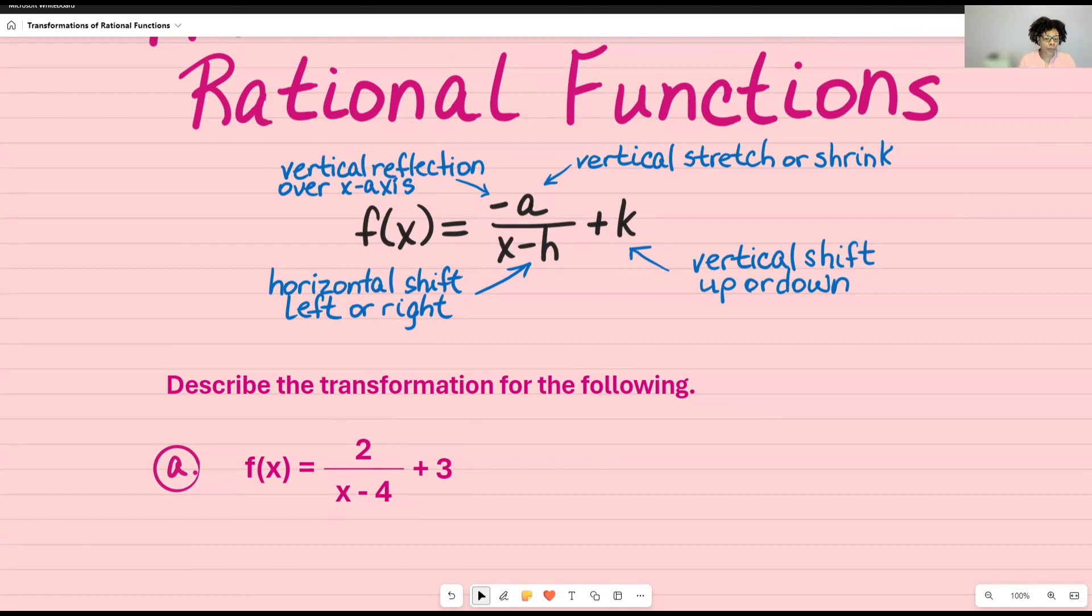So the way that I want you to write it in class is either to put a V for vertical or an H for horizontal in front of anything that you list as a transformation. So going in order, I see that number 2 is going to be vertical. And like I said, it's a stretch by a factor of 2. I want to be very specific.